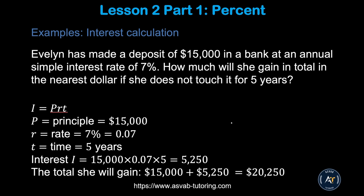Next, we'll learn how to calculate interest. The formula is I = PRT, where I is interest, P is the principal, R is the rate, and T is time in years. For this Officer Candidate test, simple interest is sufficient — you don't need compound interest.